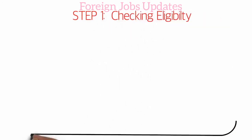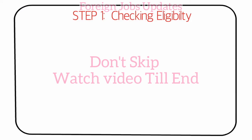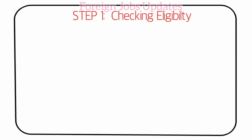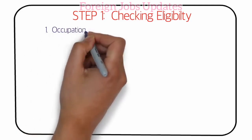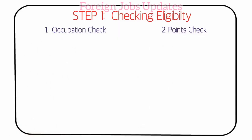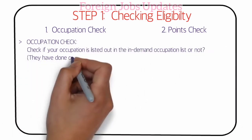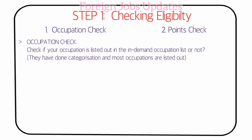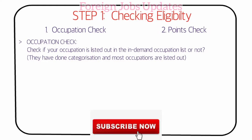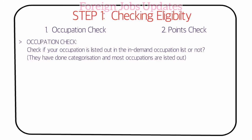Step 1 is the eligibility check. There are 2 types of checks: occupation-related eligibility and points check. You can check the occupations related to your field. Occupations include jobs like software, driving, tailoring, and labor work.